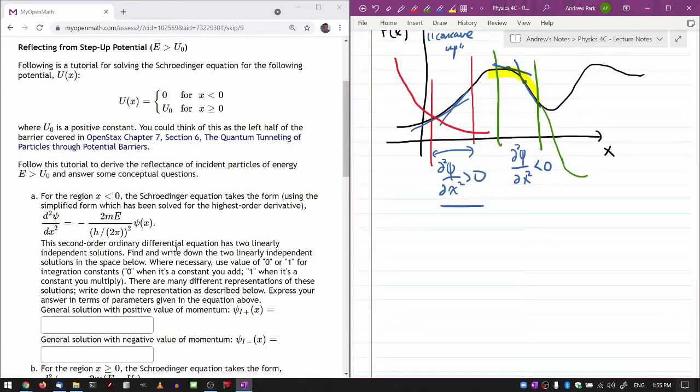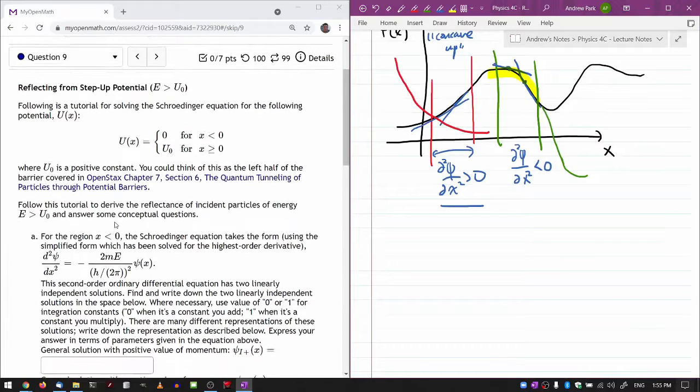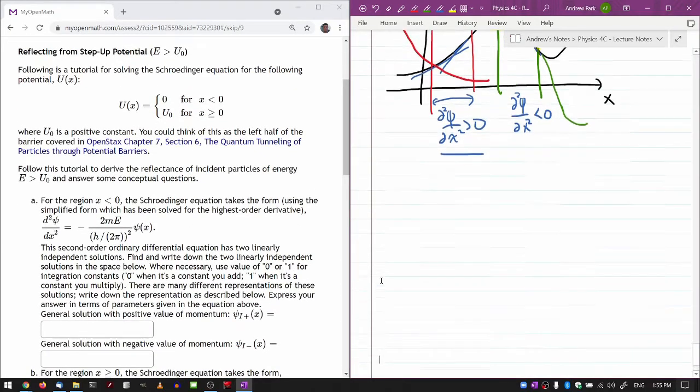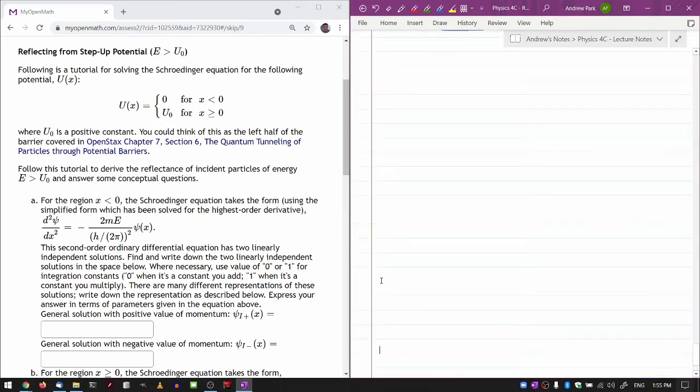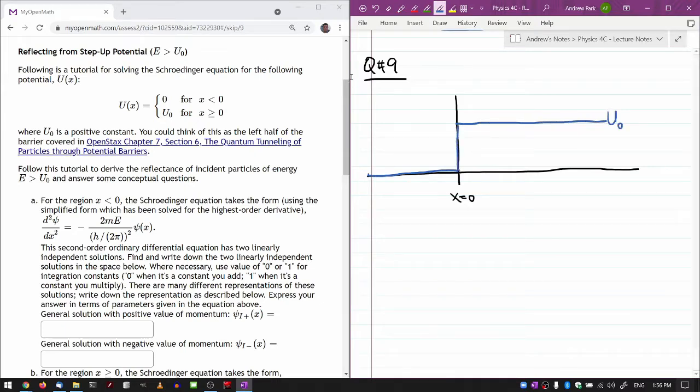This is the first of a three-part tutorial, though the first part doesn't mention it. We'll just work through it. It says reflecting from step-up potential. Following a tutorial for solving Schrödinger equation. Let me start by sketching things out. Question 9 is Schrödinger equation for the following potential. Let me sketch the potential.